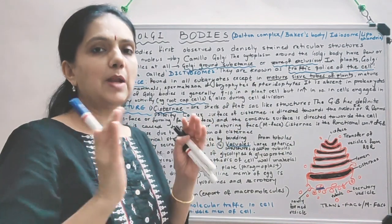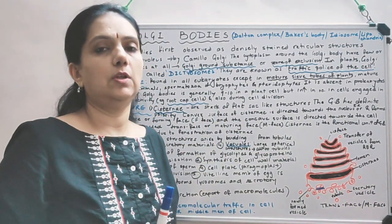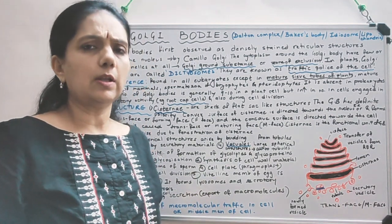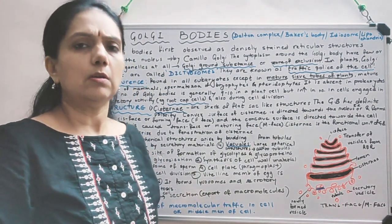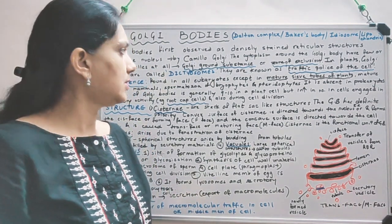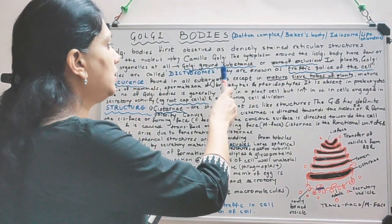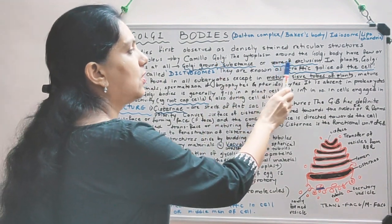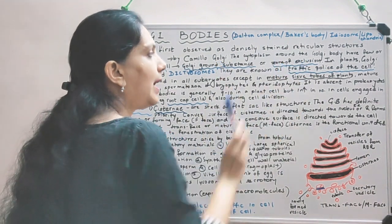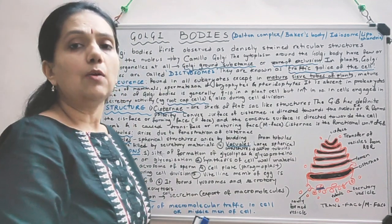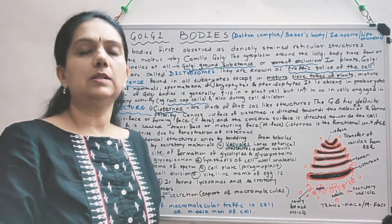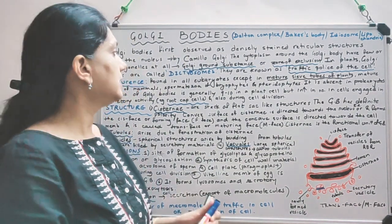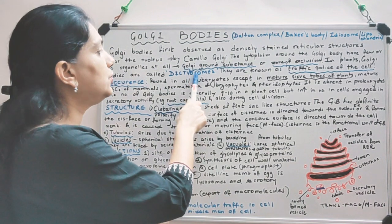The cytoplasm around the Golgi body has very less organelles or maybe no organelles at all, so it is called as Golgi ground substance or zone of exclusion. Now in plants, Golgi body is referred to as dicteozones.